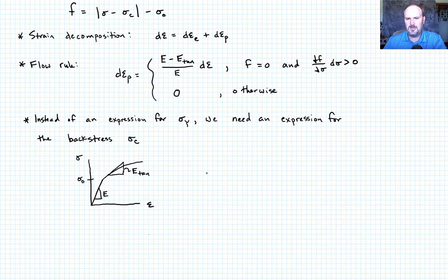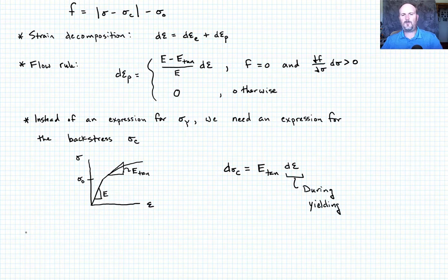What we want to observe in this curve is that during yielding, the back stress must shift exactly with the stress increase along the yield curve here. So it's going to be governed by the tangent modulus. So we could say that the stress increment d sigma c, so how much that shifts, is going to be equal to e tan, the tangent modulus, times d epsilon. And this is going to be a d epsilon that occurs during yielding.